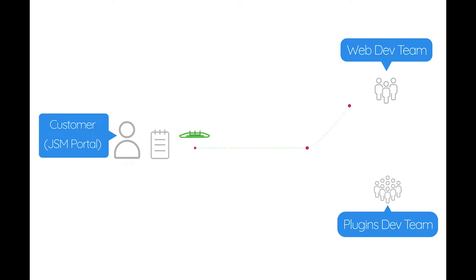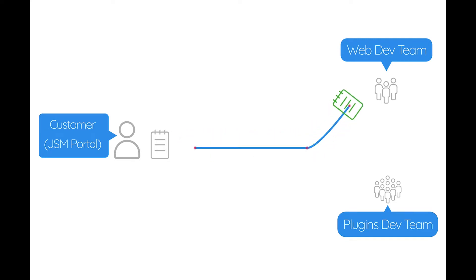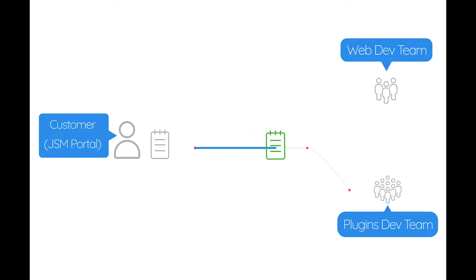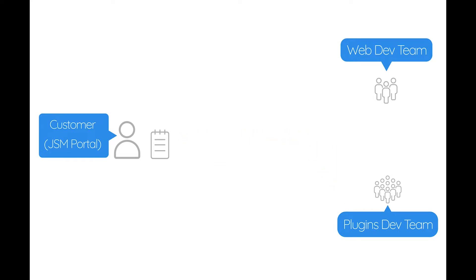Today, we will show you how you create a customer bug request from the portal and then use automation to create and link development tasks to the corresponding JIRA software project. Stay tuned for the full tutorial.